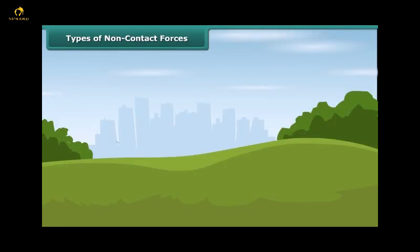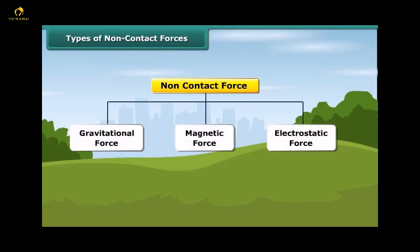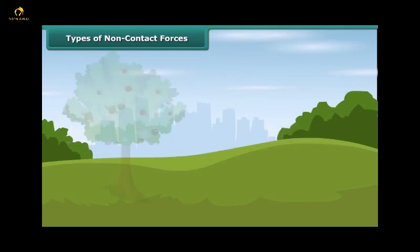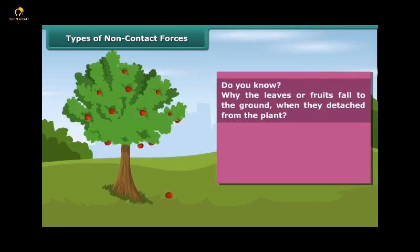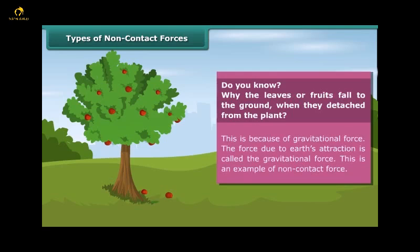Types of non-contact forces. The types of non-contact forces are gravitational force, magnetic force, and electrostatic force. Do you know why the leaves or fruits fall to the ground when they're detached from the plant? This is because of gravitational force. The force due to Earth's attraction is called the gravitational force. This is an example of non-contact force.